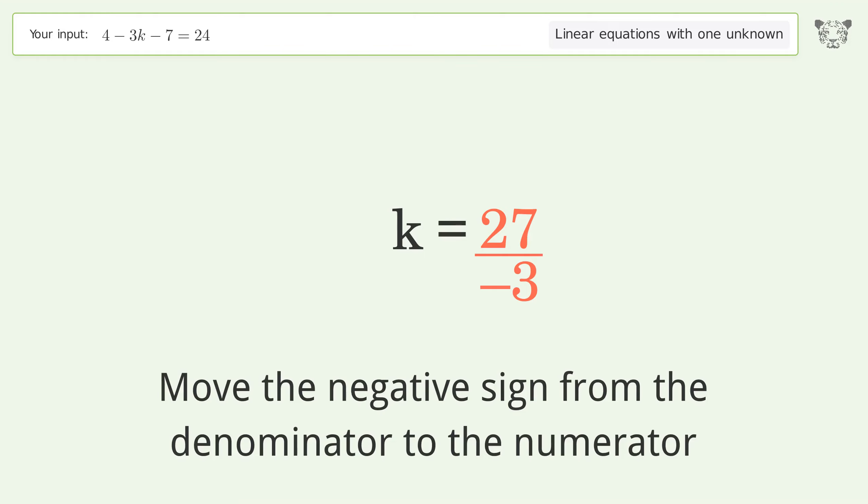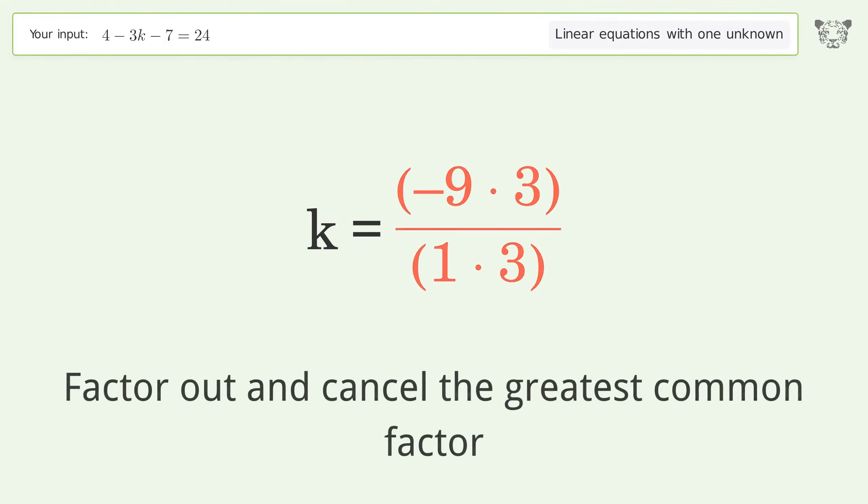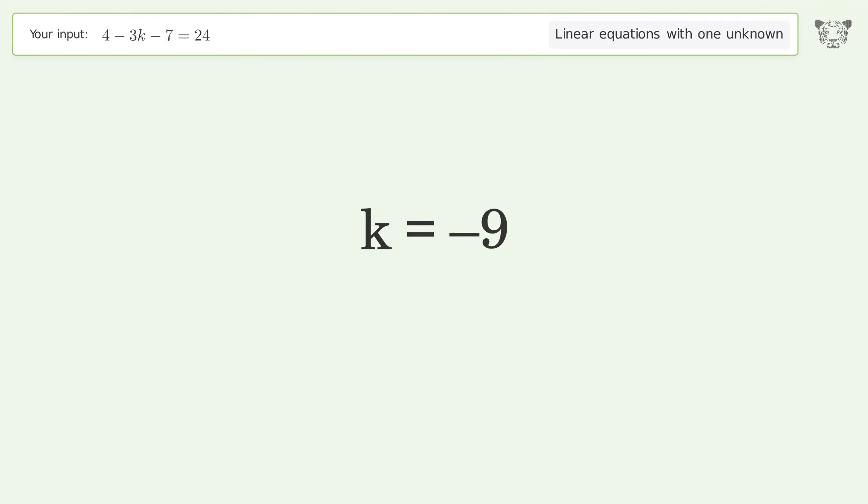Move the negative sign from the denominator to the numerator. Find the greatest common factor of the numerator and denominator. Factor out and cancel the greatest common factor. And so the final result is k equals negative 9.